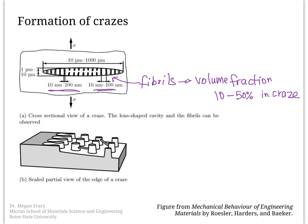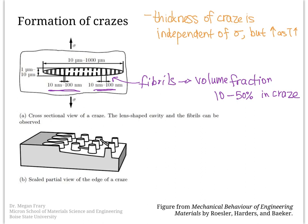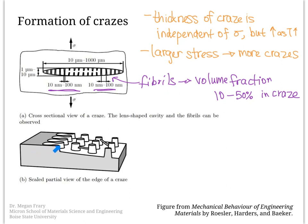The thickness of the craze is independent of the applied stress, but does increase as the temperature goes up. However, if there is a larger stress, there will be more crazes. A partial edge view shows the fibrils in the center of the craze. You can also start to see how the craze grows wider, which will be covered in the next slide on the craze growth process.